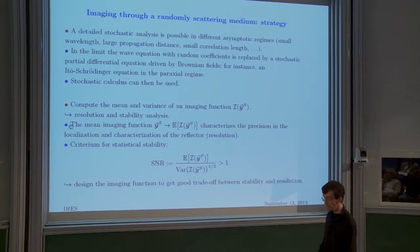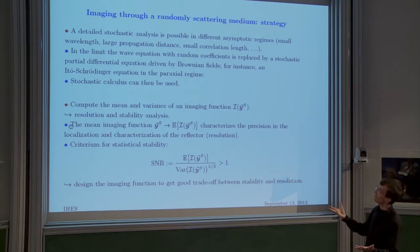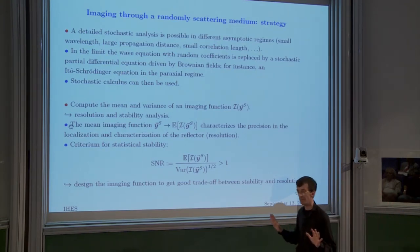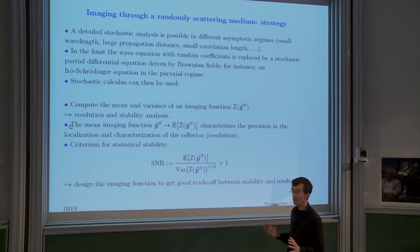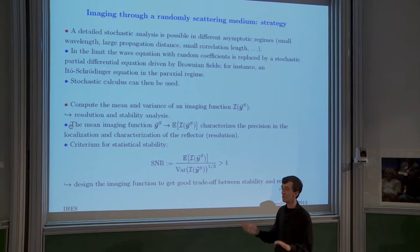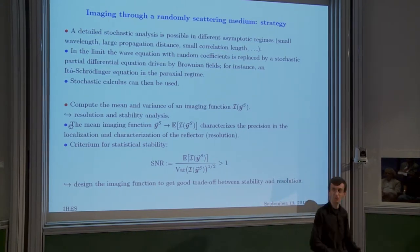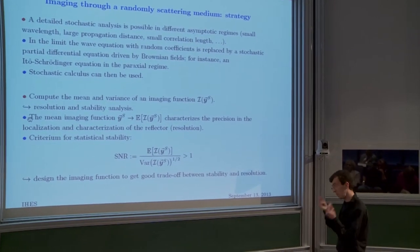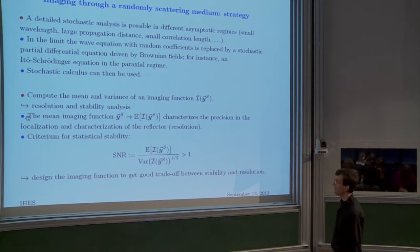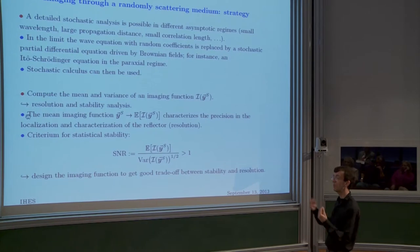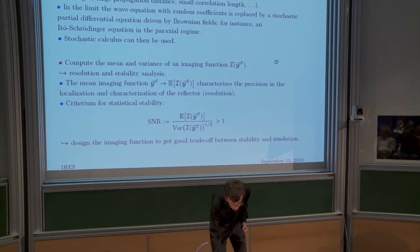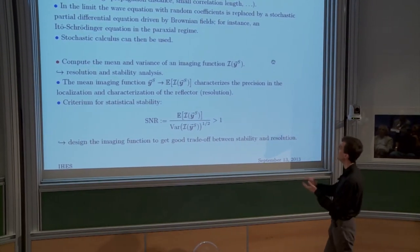The Itô-Schrödinger equation is a PDE in which the noise appears as a Brownian field. This is good because once you have a Brownian motion or field, you have Itô stochastic calculus — tools to analyze the equations. These tools allow you to describe quantitatively the statistics of your data. From this knowledge you can design new imaging functions. You can analyze any imaging function, including Kirchhoff.